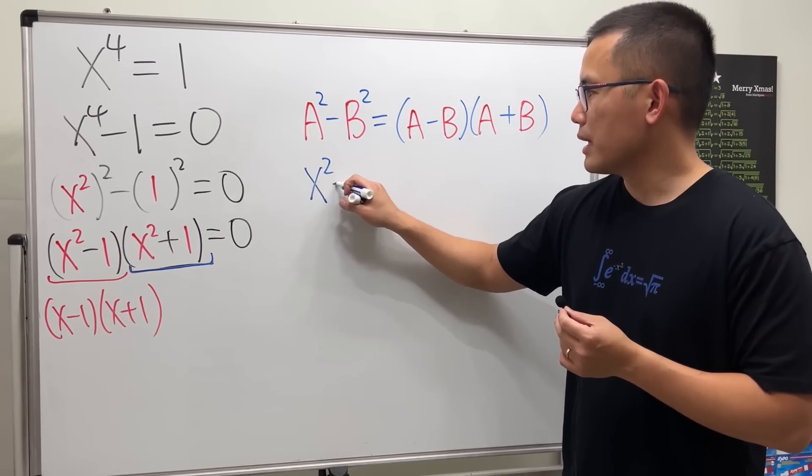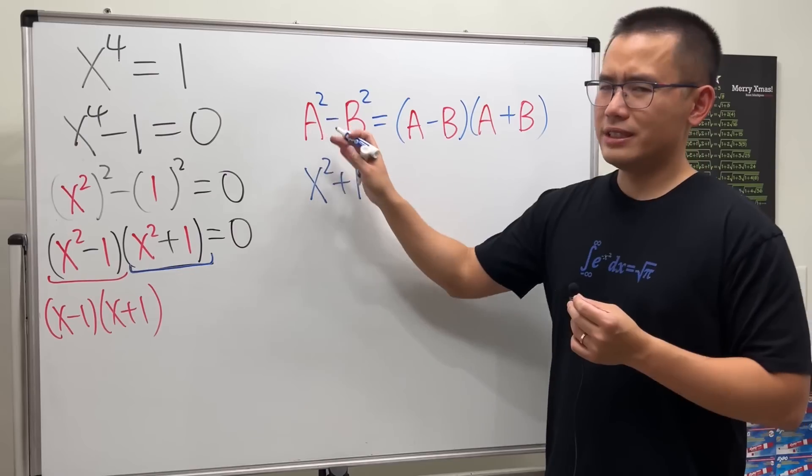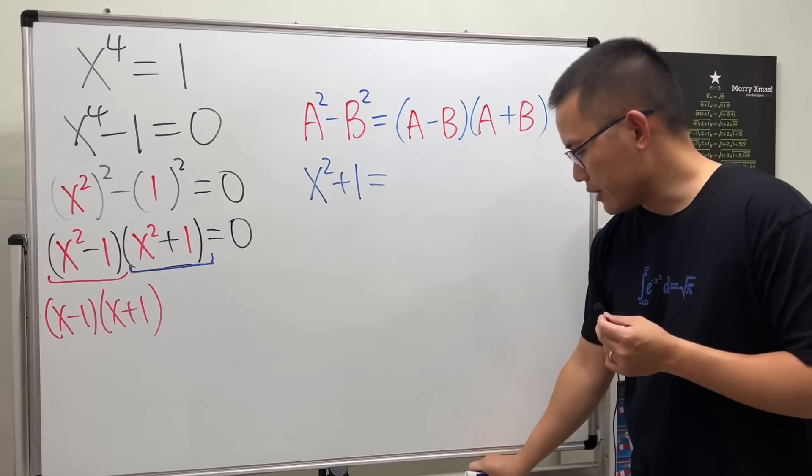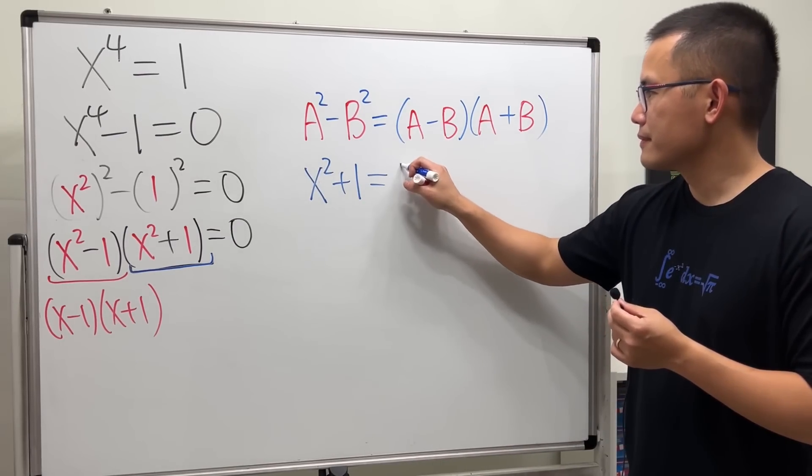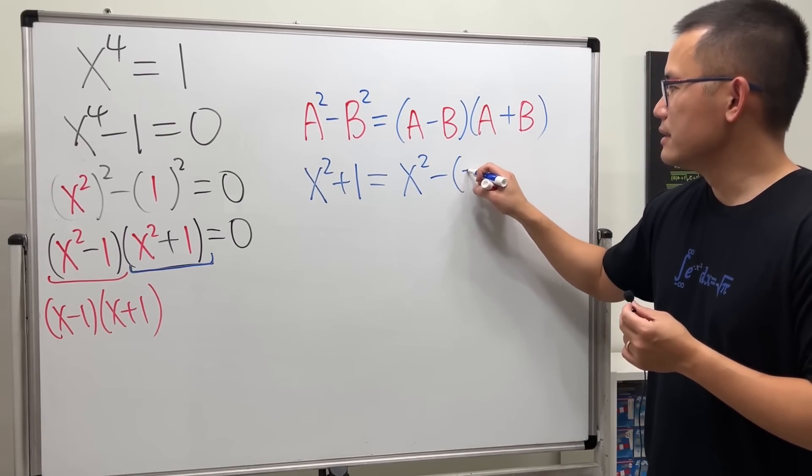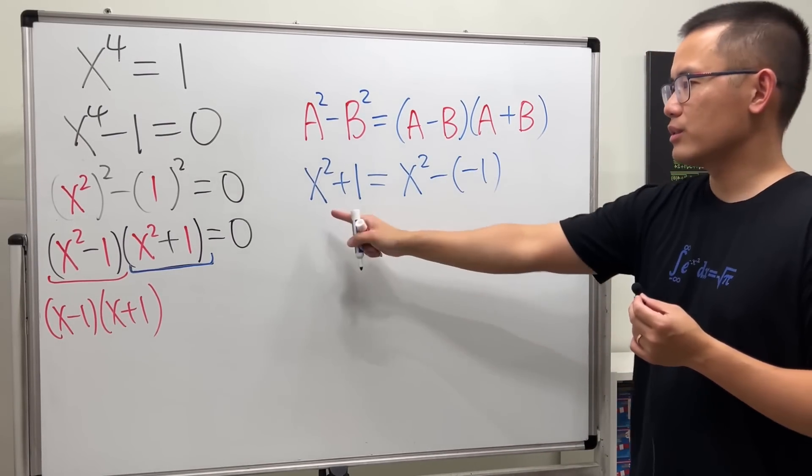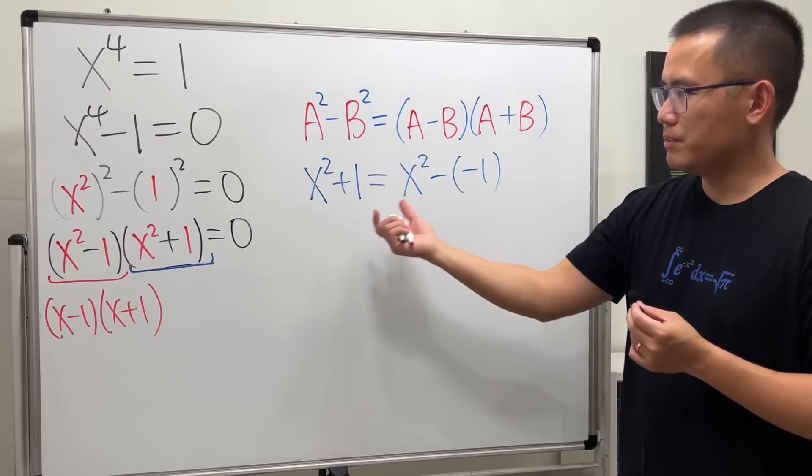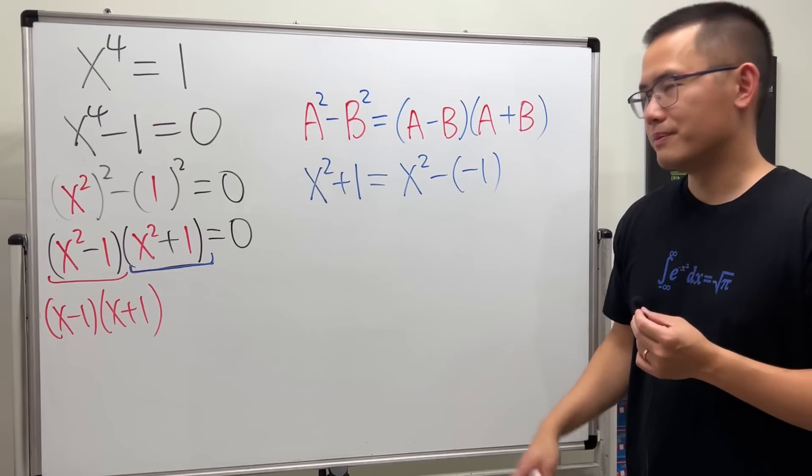Now, x squared plus 1. I really want to see a minus. It's okay. Let's see we have this as x squared minus negative 1. Right, minus minus is going to be positive. Good. But now, how can we produce the difference of two square form now? Check this out.